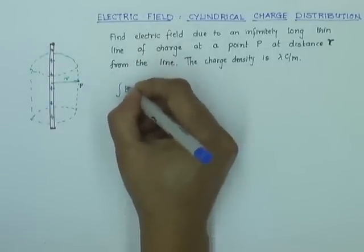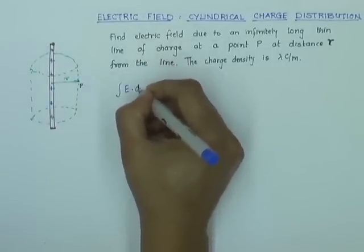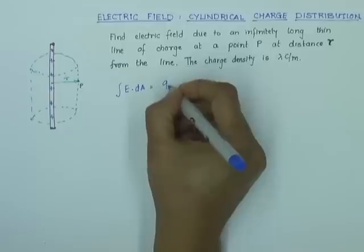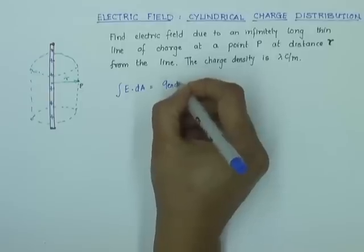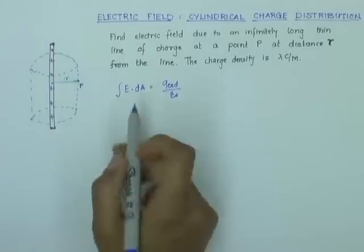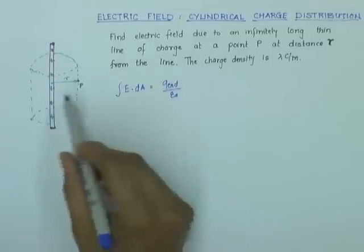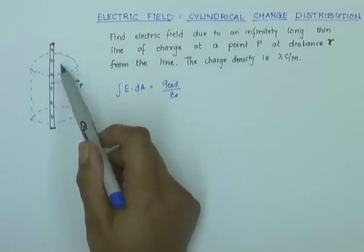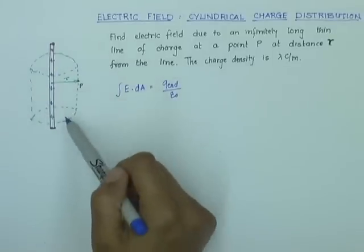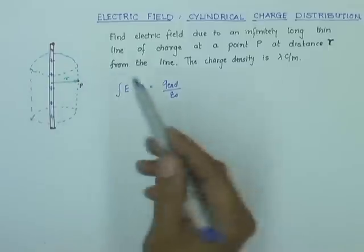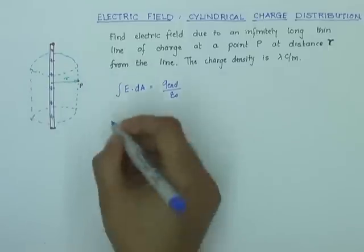So I have the integral of E dot dA equals Q enclosed over epsilon-zero. Now my dA is made up of three surfaces: one is the top surface, one is the bottom surface of the cylinder, and the third is the curved surface of the cylinder.